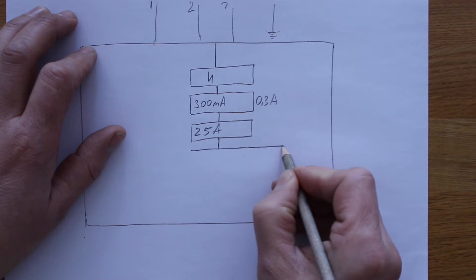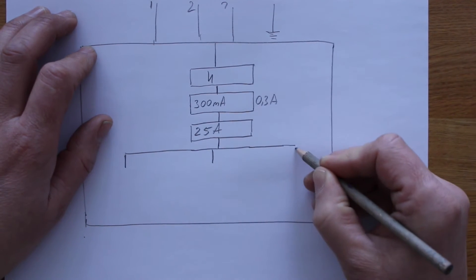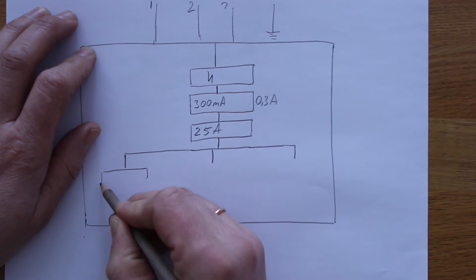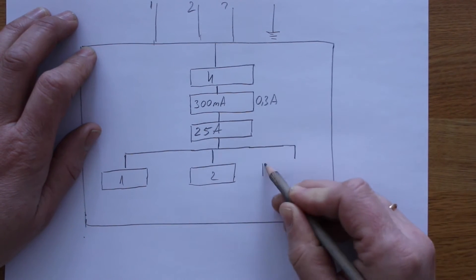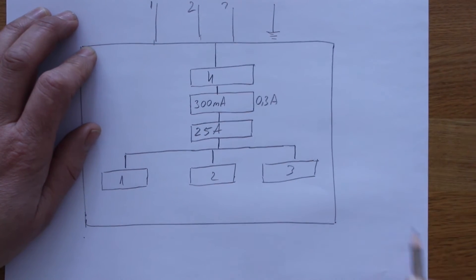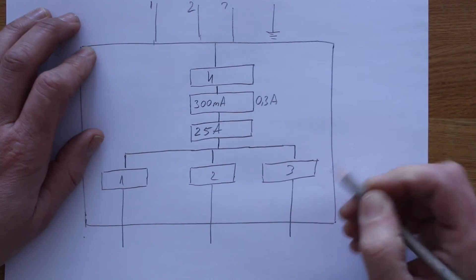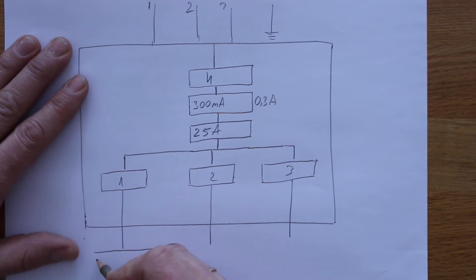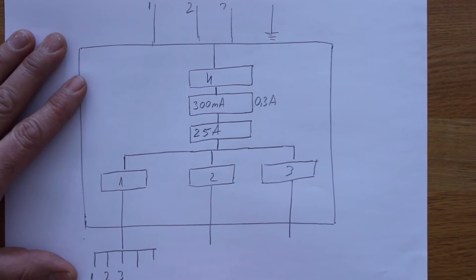And then three switches to distribute to the other floors. Switch one, switch two, switch three. And big cable. In general it's cables like five cores: one, two, three, four, five. One, two, three, and then L and N. This is the same.